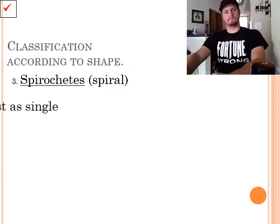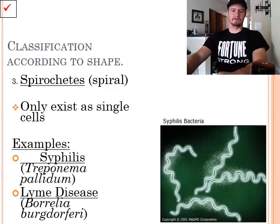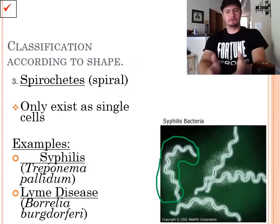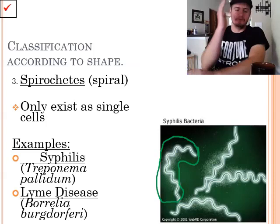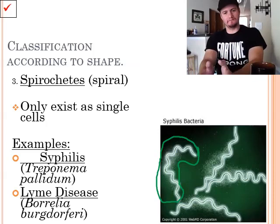So, continuing here, we also have the spirochetes, or the spiral type. Now, spirals can only exist as single cells. Some examples include syphilis and Lyme's disease. So, as you can see here, they've got a very unique kind of spiral-like structure. Now, Lyme's disease in this area is very prevalent. There's no getting around that. So, make sure you protect yourself when you go outside. Think like Pokemon. If you want to avoid ticks, avoid the tall grass. Use repellent. Just watch yourself out there, okay?